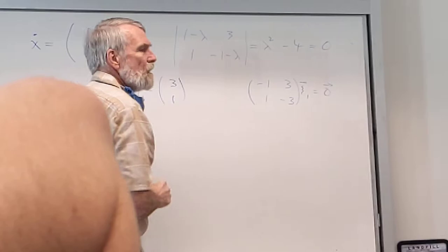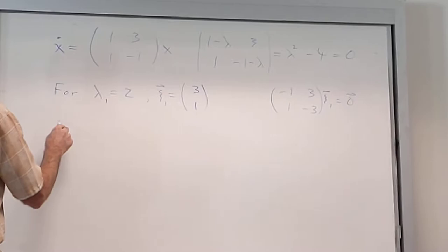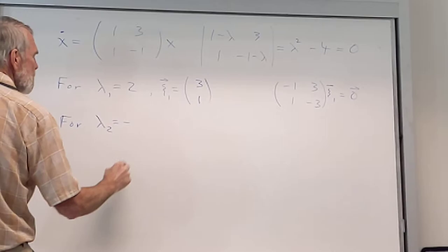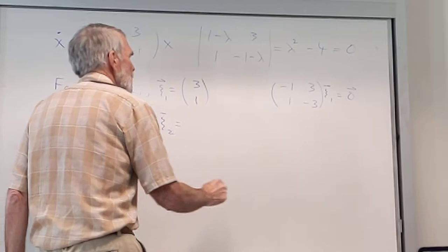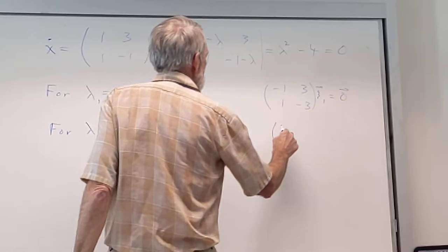Okay, now the other eigenvalue was what? Negative 2. It was minus 2. Alright. Okay, so we put minus 2 in here. We put minus 2 in here. Don't we get 3, 3, 1, 1.